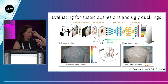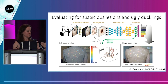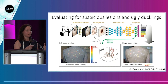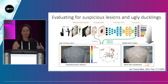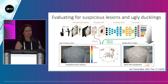Still in the research phase, but interesting: using AI to look at macroscopic images of the back, find suspicious lesions, compare them to each other, and identify ugly ducklings. Whether this would be considered a device is an open question, but it gives us an idea of where the field is going.